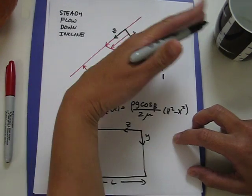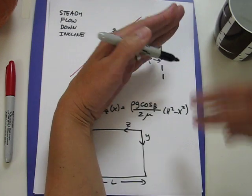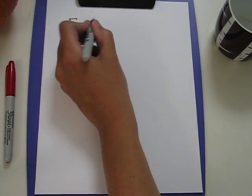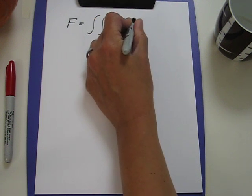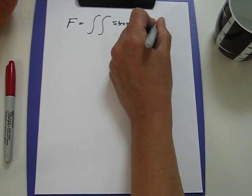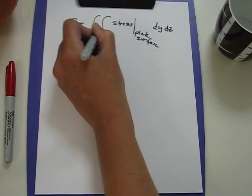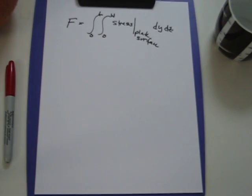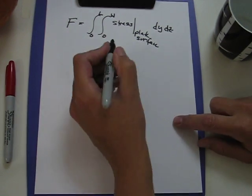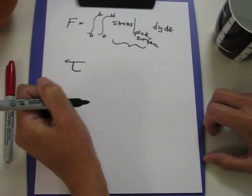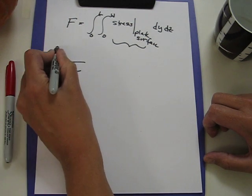The x direction is the thickness direction, but we want this flat plate, and it's the y direction that gives us the surface of this plate. So to get the total force, we need the integral of the stress at the plate surface, dy dz, where y goes from 0 to W and z goes from 0 to L. The problem now becomes: what is this stress quantity? This is where our friend the stress components comes in.